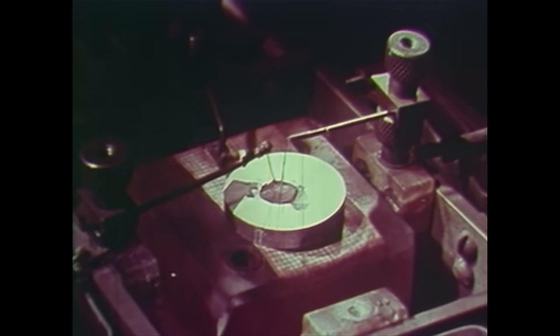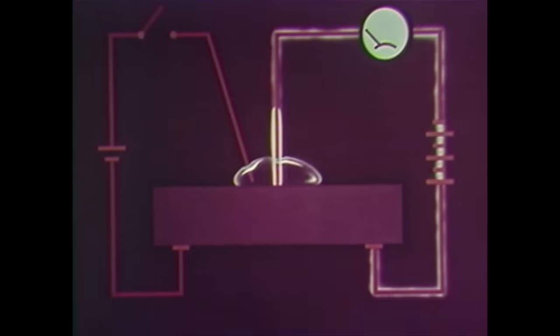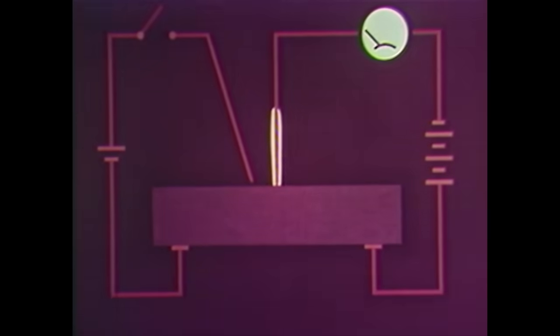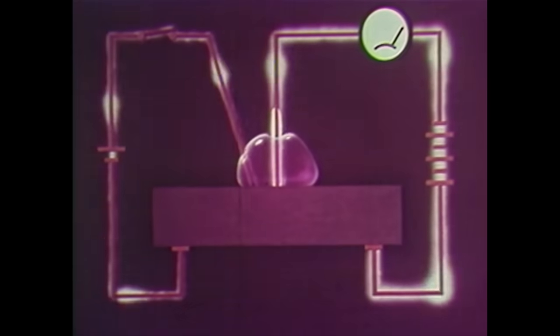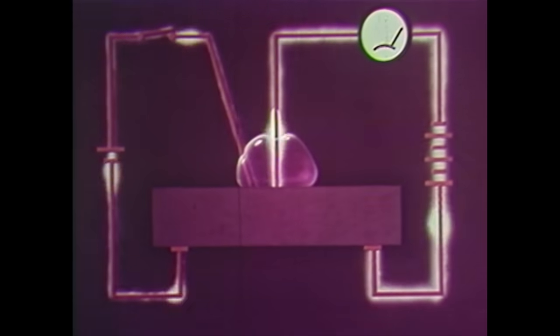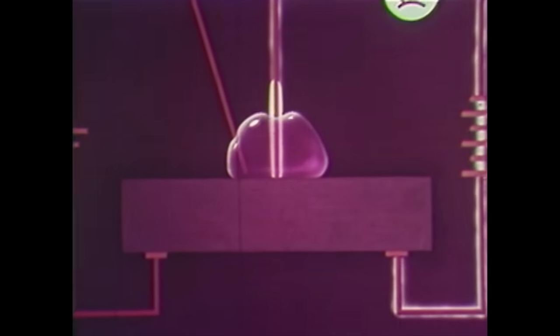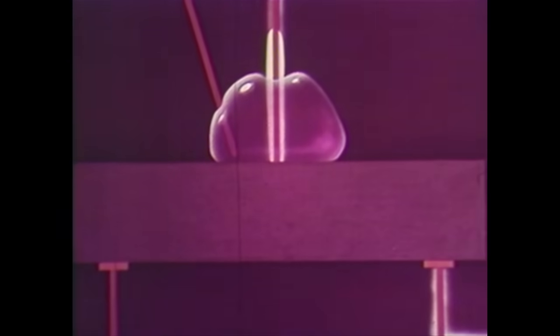But there were several problems. The water evaporated too quickly, so they changed the electrolyte to glycol borate, which evaporates very slowly. This worked quite well, but the device would not amplify above eight cycles per second. They were quite sure that the electrolyte was responsible for the slow response.